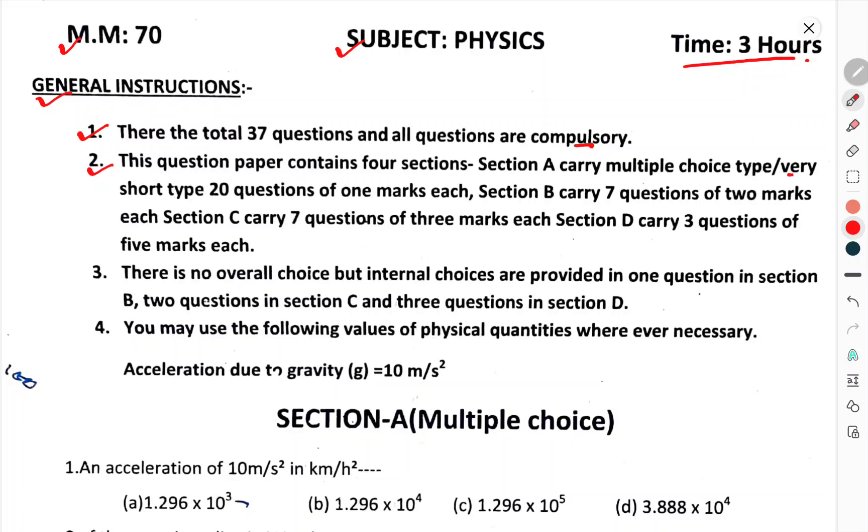Section A carries multiple-choice questions, various answer type questions, 20 questions, 1 mark each. Section B carries 7 questions of 2 marks each. Section C carries 7 questions, 3 marks each. Section D carries 3 questions of 5 marks each.